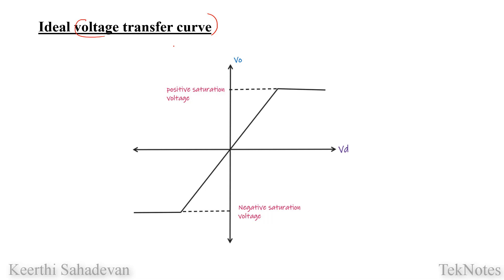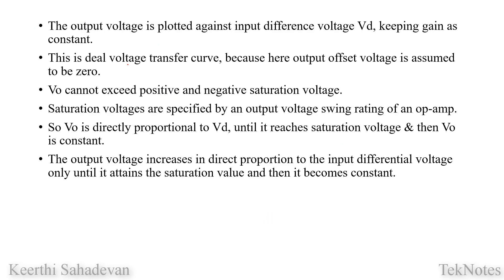Now let us start with the voltage transfer curve. The voltage transfer curve plots output voltage versus input differential voltage. The Y-axis is the output voltage V0. This is the ideal voltage transfer curve because the output offset voltage V0 is assumed to be zero. The output voltage is plotted against input differential voltage, keeping gain constant.